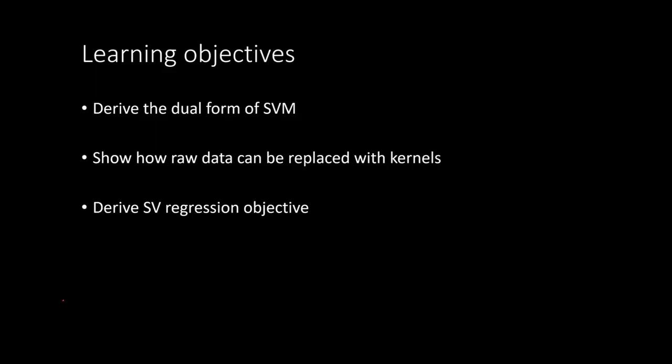The learning objectives for this module are: we will derive the dual form of support vector machine, and that dual form will allow us to represent data as kernels. We will replace pairs of data points by kernels, which will bring nonlinearity into the classification or regression task. We will also derive the support vector regression objective.